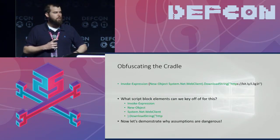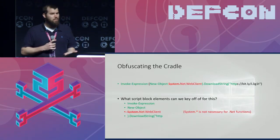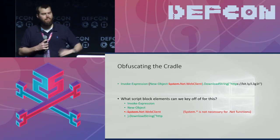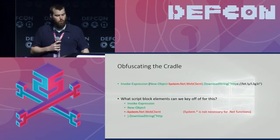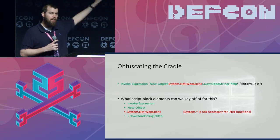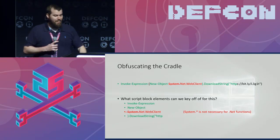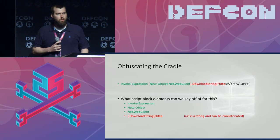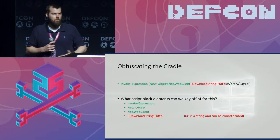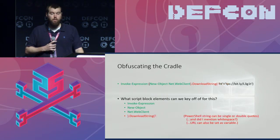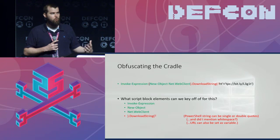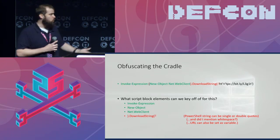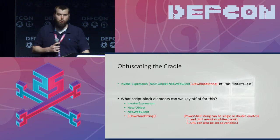Let's go through an obfuscation exercise and see what pitfalls are out there. First, 'system.' is not necessary in PowerShell — PowerShell will automatically prepend it for the .NET class, so as a defender we shouldn't assume attackers include it. Next, the URL is a string, so attackers can concatenate it inline, use single quotes, add whitespace, or set it as a variable elsewhere. We'll remove the HTTP part from the download string portion of the detection. Download string is actually one of many methods in the net.webclient class; there's also download file and download data — so as a defender, let's shorten it to '.download' to capture all options.